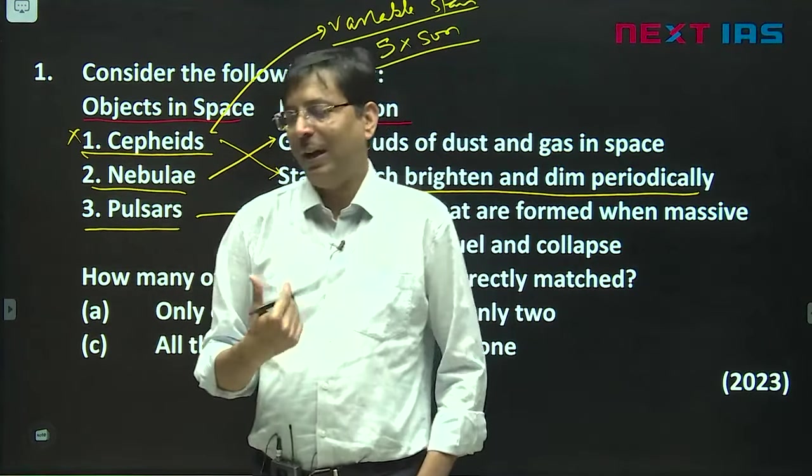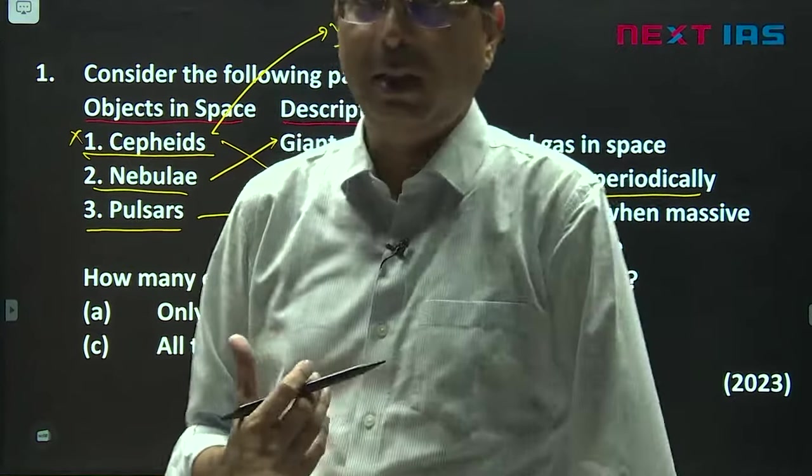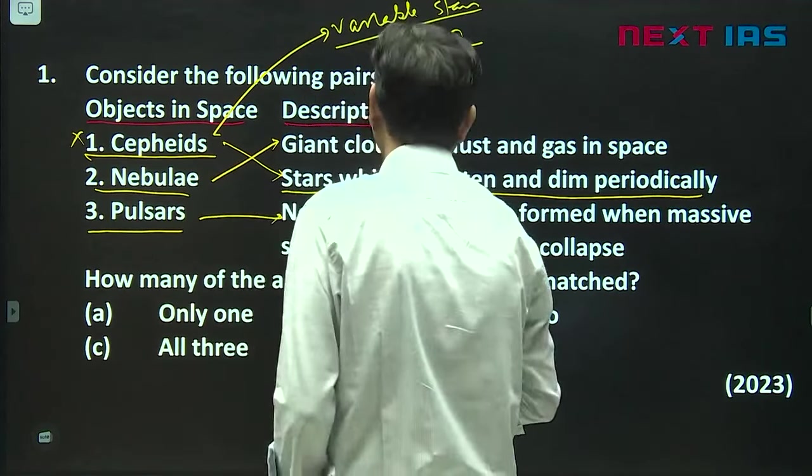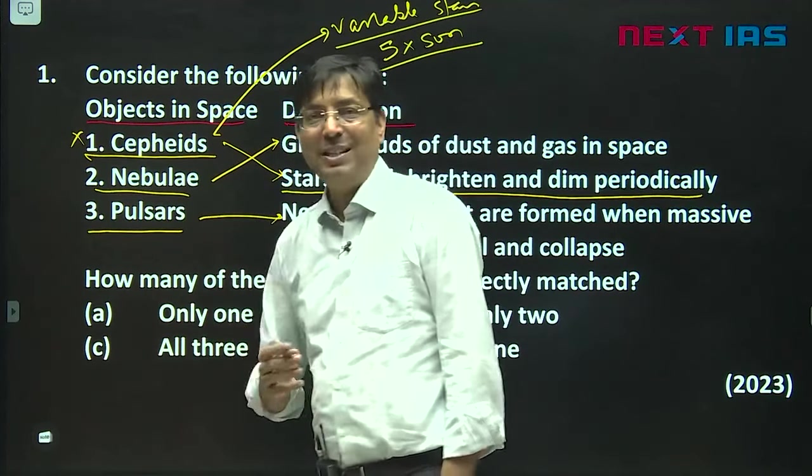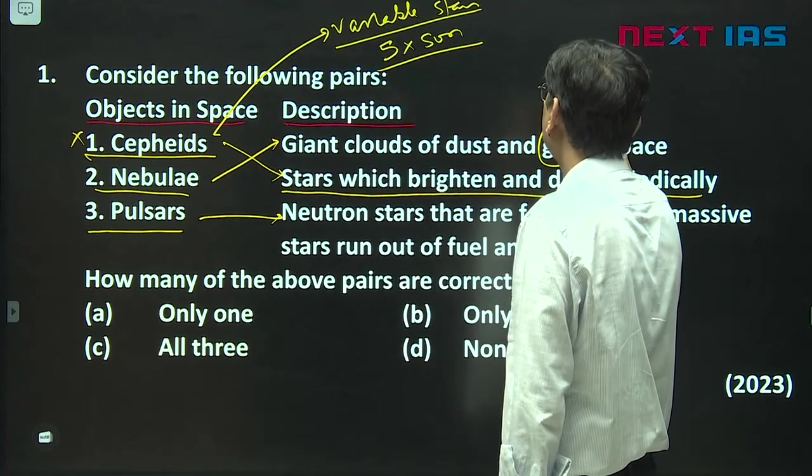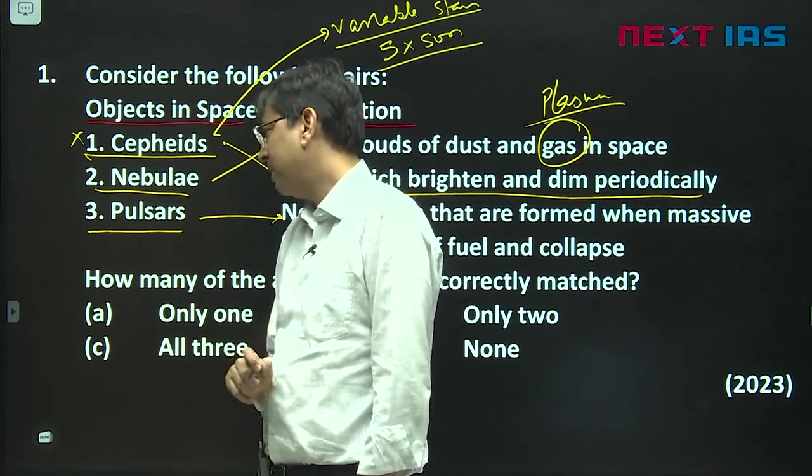Then what is Nebula? Nebula is nothing but the giant cloud of dust and gas in space. Gas means plasma here, so it is nothing but plasma. For Nebula, that is Pulsars.